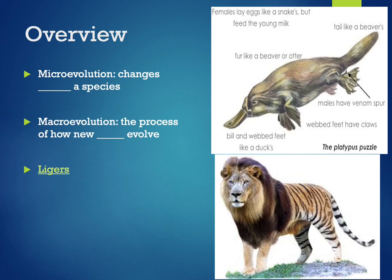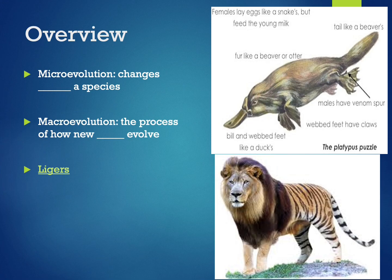So far in this class we looked at how natural selection can alter allele frequencies and therefore phenotypes in a population. For example, we looked at how the beaks of the medium ground finch got deeper during a drought on Daphne Major. These changes within a species are what have been referred to as microevolution. But how do new kinds of organisms or new species evolve? This much larger process is known as macroevolution, and is something we'll examine in more detail in this lecture.